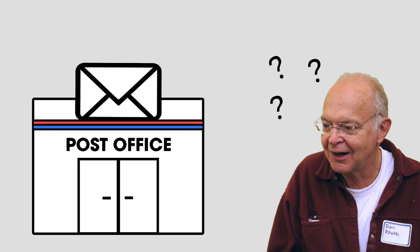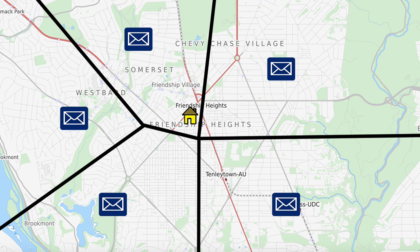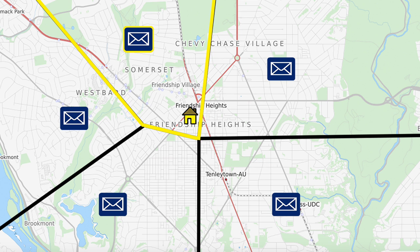Consider a classic problem solved by using Voronoi diagrams: Knut's post office problem. Given the location of nearby post offices, which one is closest to your house? To solve this, construct a Voronoi diagram by letting the post offices be the seeds. Find the cell containing your house — the corresponding seed is the closest post office.